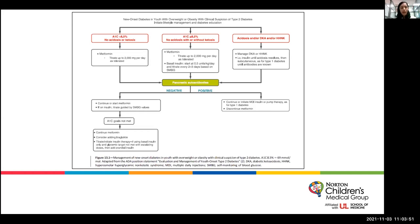Monitor blood sugars closely, assess whether glycemic targets are being met, and wean insulin as tolerated as glycemic control improves. Any child with acidosis, DKA, or HHS should be sent to an ICU setting and managed appropriately. The real key is that if a diagnosis of diabetes has been made — even if type 2 is suspected — obtaining pancreatic autoantibodies is paramount to making appropriate management decisions. If the initial A1C is greater than or equal to 8.5%, even without acidosis or ketosis, these children really need to be started on insulin therapy, even if just basal insulin.